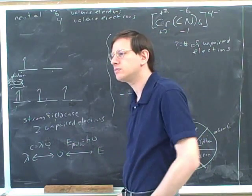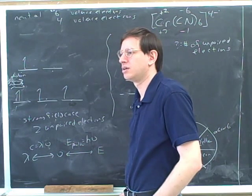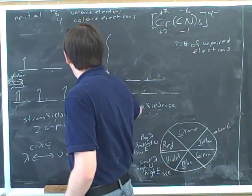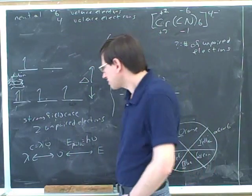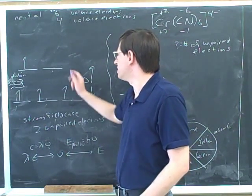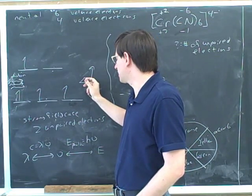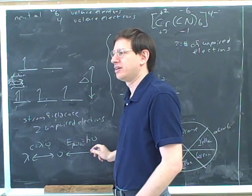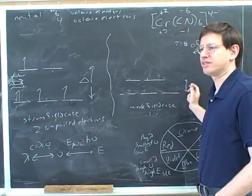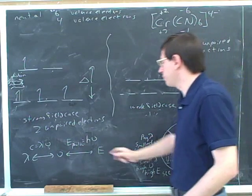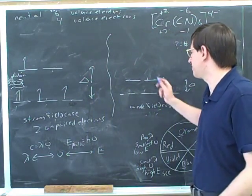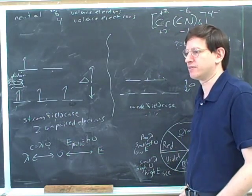Because transition metals have different energy levels, they will absorb specific photons. Different complexes are going to have different energy differences. To figure out what wavelength is absorbed, we need to know the energy difference — and whatever that energy difference is, that has to be the exact same energy as the photon that's absorbed. That tells us the frequency and wavelength. A transition metal with a smaller energy difference would absorb a photon with less energy, lower frequency, and a higher wavelength. So because there are different amounts of energy splitting for different complexes, there will be different colors for different complexes.